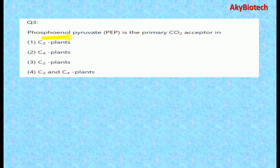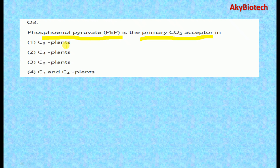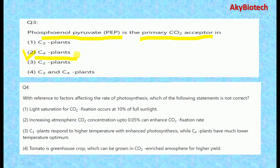Question three: PEP, that is phosphoenol pyruvate, is the primary carbon dioxide acceptor. We know that it is the carbon dioxide acceptor in the case of C4 plants.